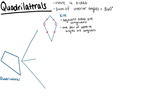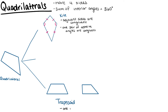Another type of quadrilateral is a trapezoid. Trapezoids have one pair of parallel lines. We may have a trapezoid that has one pair of congruent sides, or a trapezoid that has two right angles. However, any time we have a quadrilateral with one pair of parallel lines, it is a trapezoid.